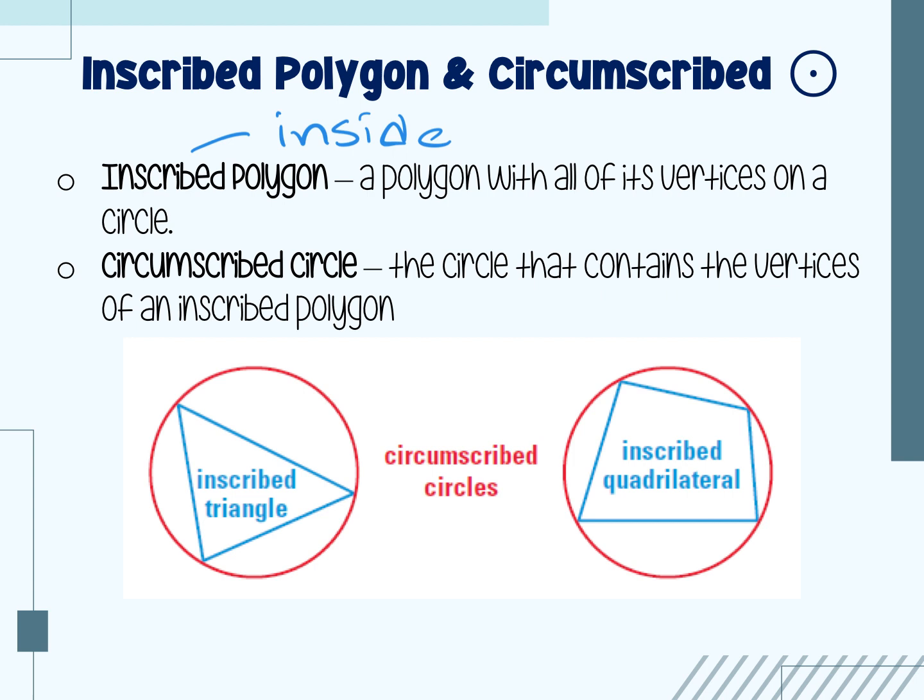Or I could also say the circle is circumscribed about the triangle. I could also say the circle is circumscribed about the quadrilateral. Either way — it's just the way that you state the sentence.